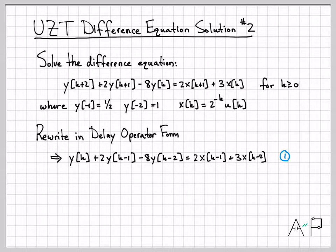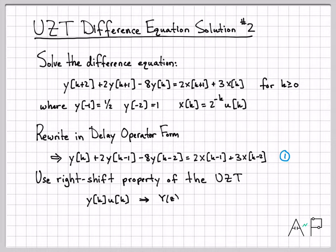I'm going to call this equation 1. And what we're going to do now is use the UZT and go into the Z domain with each one of these terms. To do that, we have to use what we call the right shift property of the UZT. So the first one is pretty easy. Y(k) just goes into the Z domain as Y(z).